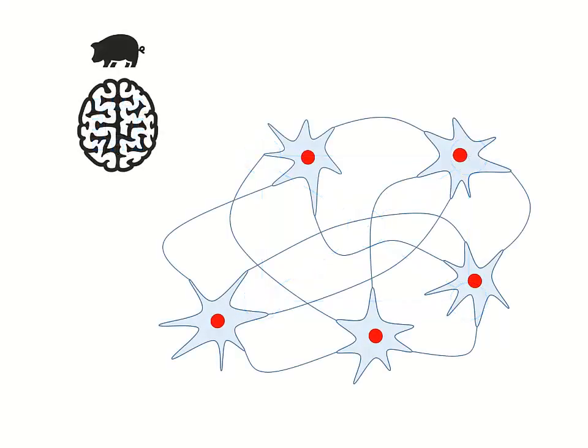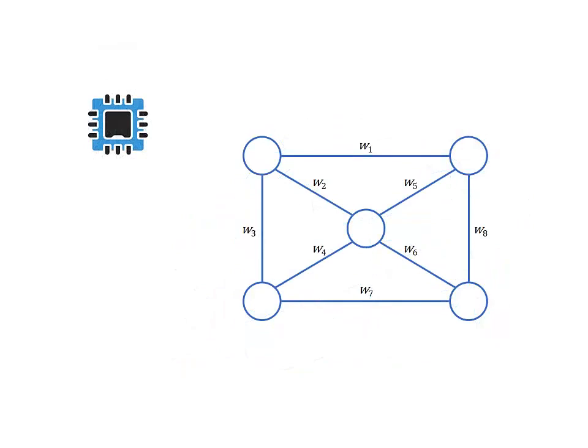Humans can learn from new information, adjusting the strength of neural connections as we do so. In an artificial neural network, the connections are assigned numeric values known as weights. Training a neural network on data involves adjusting the weight values to achieve a desired outcome.